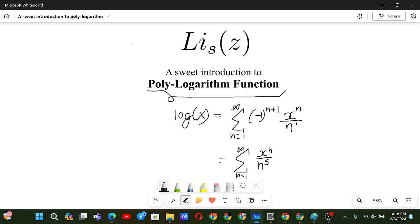this sum over here is considered as polylogarithm function of x. Now, if we take the special case where s equals to 1, in that case, the polylogarithm function becomes minus log of 1 minus x.